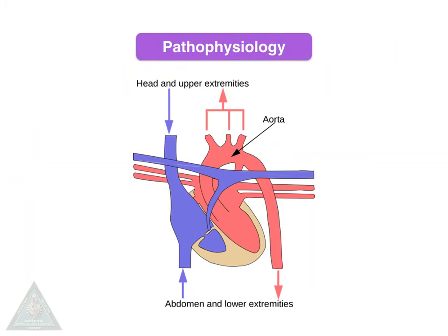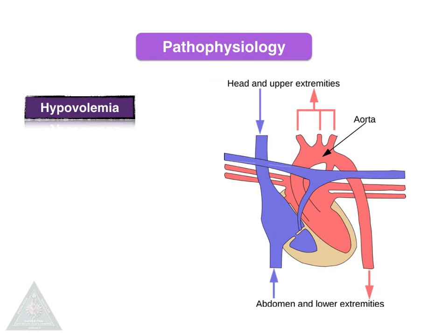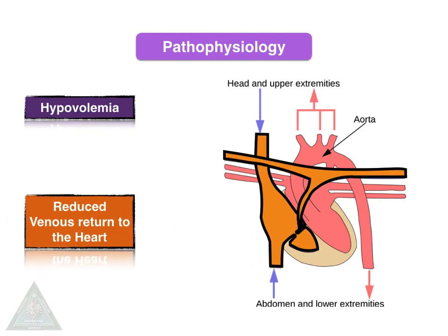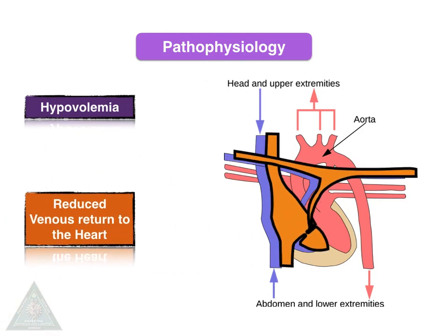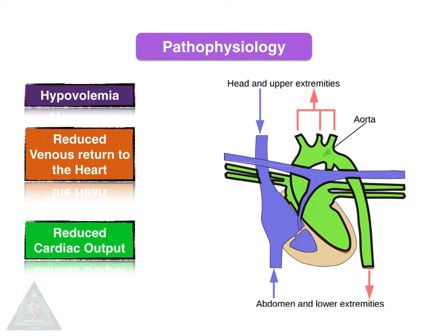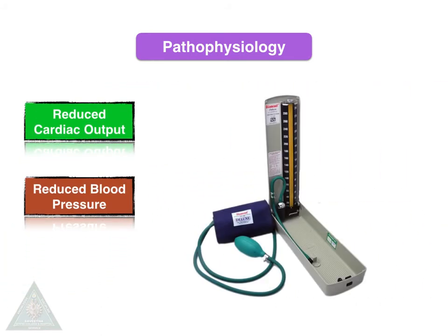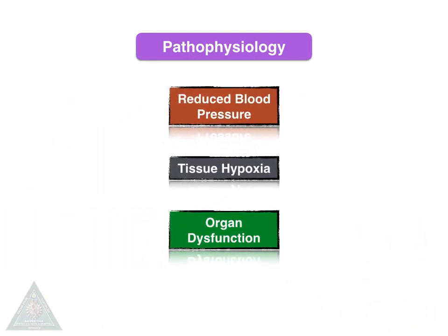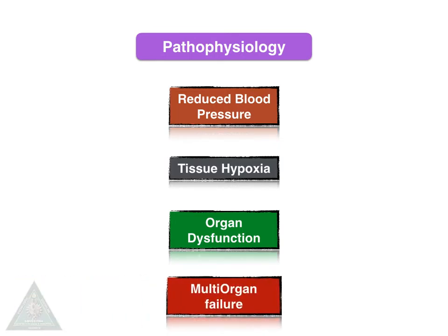Coming to the pathophysiology of hypovolemic shock, we can see the venous return — that is, the venous inflow into the heart shown in blue colour and cardiac output in red colour. In hypovolemia, there will be reduced venous return to the heart and reduced cardiac output, which in turn results in reduced blood pressure, tissue hypoxia, organ dysfunction, and finally multi-organ failure.